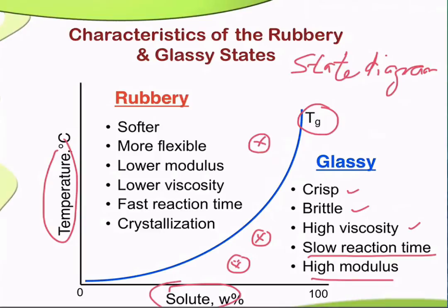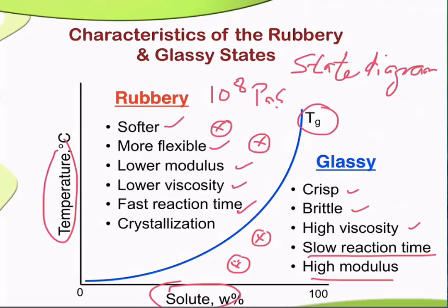Any point above the blue line means the material transforms into a rubbery state. In the rubbery state, viscosity is much lower — around 10 to the power of 7 or 10 to the power of 8 pascal-seconds — allowing molecular mobility due to free volume in the system. The material in the rubbery state will be softer, more flexible, with lower modulus and lower viscosity. This allows physical and chemical reactions such as oxidation, enzymatic browning, and crystallization.